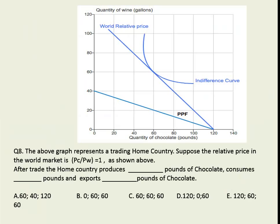In the Ricardian model, a country opens up to trade with given world prices. Wherever the world price line hits the production possibility frontier is how much they produce, and then they consume at a separate point. So they're producing 120 units and consuming 60 units. The difference — 120 minus 60 equals 60 — is what they export. So they produce 120, consume 60, and export 60 units. The answer here is E.